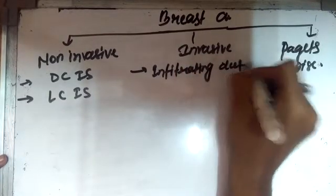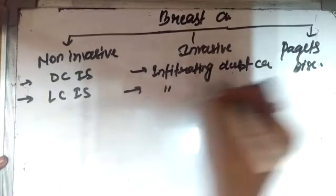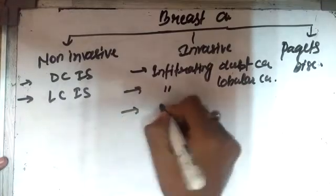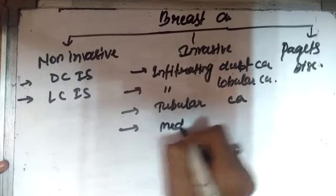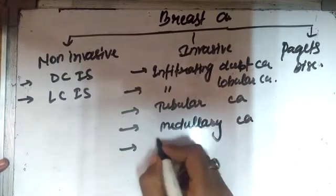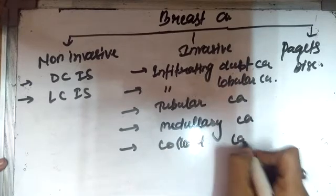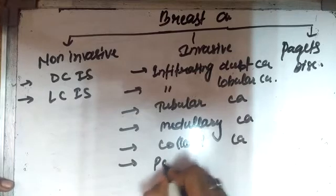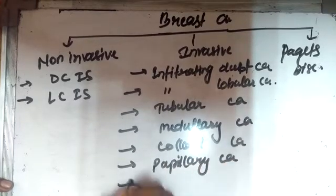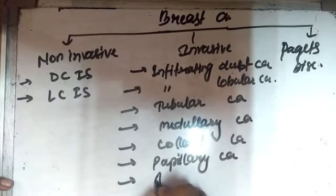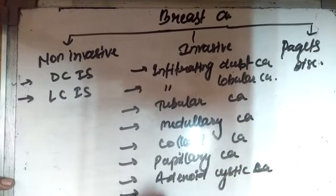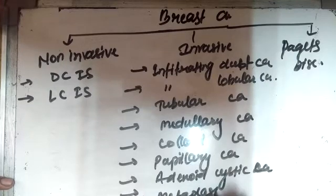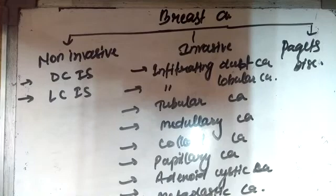In invasive type we have infiltrating duct carcinoma, infiltrating lobular carcinoma, tubular carcinoma, medullary carcinoma, colloid carcinoma, and some other types include papillary carcinoma, adenoid cystic carcinoma, and metaplastic carcinoma.